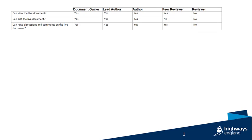There are different user roles available within Documents in CARS. There is the Document Owner, Lead Author, Author, Peer Reviewer, and Reviewer.